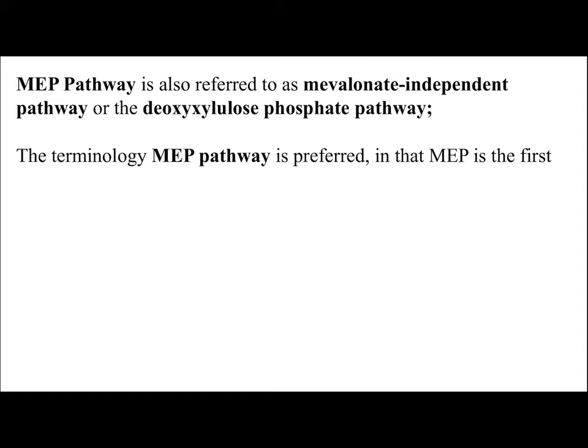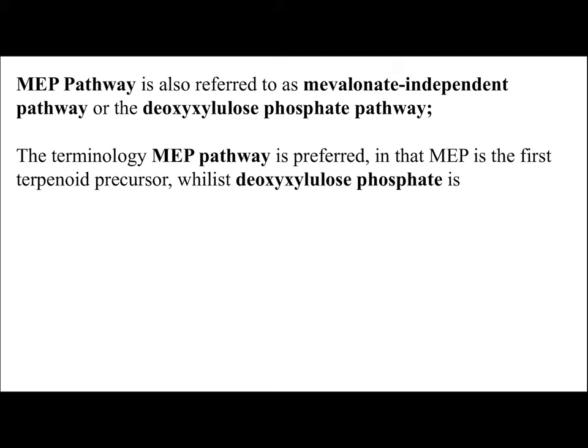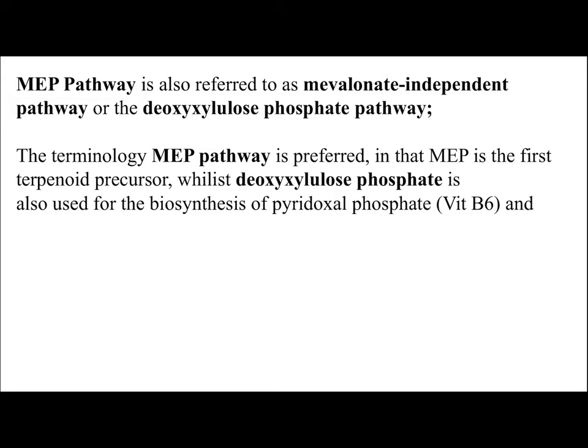The terminology MEP pathway is preferred because MEP is the first terpenoid precursor — monoterpenes are produced from MEP. From deoxyxylulose phosphate, pyridoxal phosphate (vitamin B6) and thiamine (vitamin B1) are produced, so the deoxyxylulose phosphate pathway name is rarely used. The MEP pathway is present in plants, microorganisms, and parasites, and is helpful for biosynthesis of monoterpenes, diterpenes, tetraterpenes, and other terpenoid derivatives.